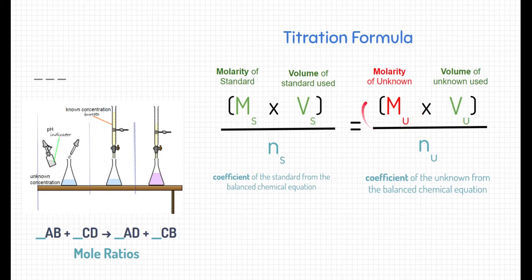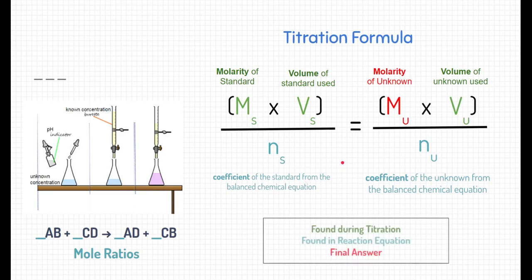Finally, and ultimately, this is what we're trying to figure out: the molarity of our unknown using this equation. We plug everything in, simplify, do a little division, and we've solved it. The green things are found during a titration, the blue things require writing out a reaction equation to find the coefficients, and our final answer is the red value.